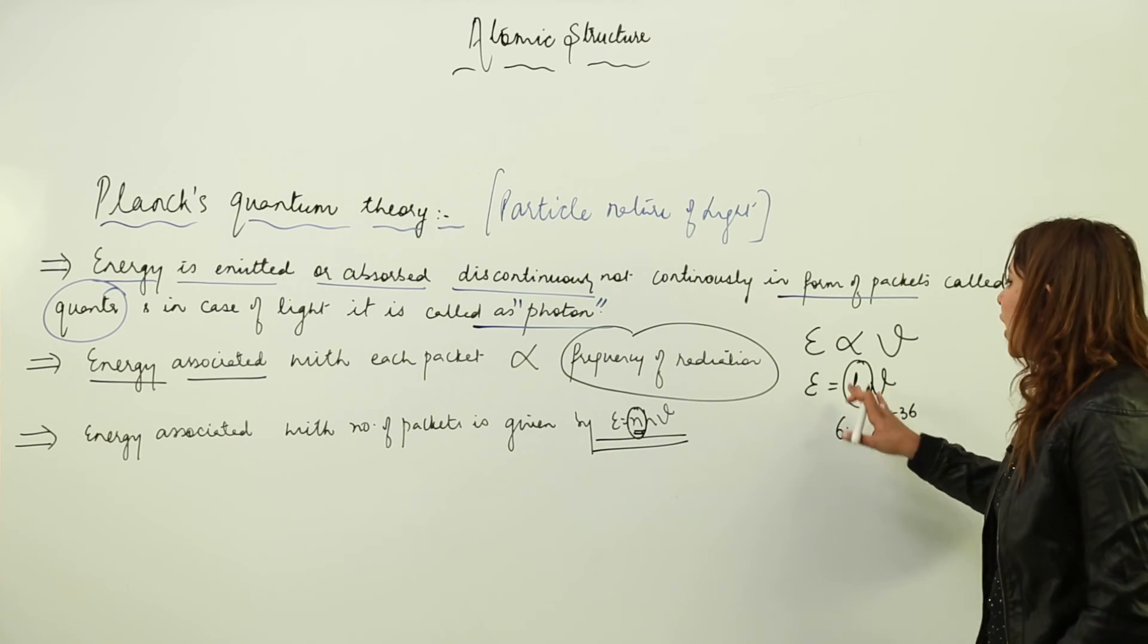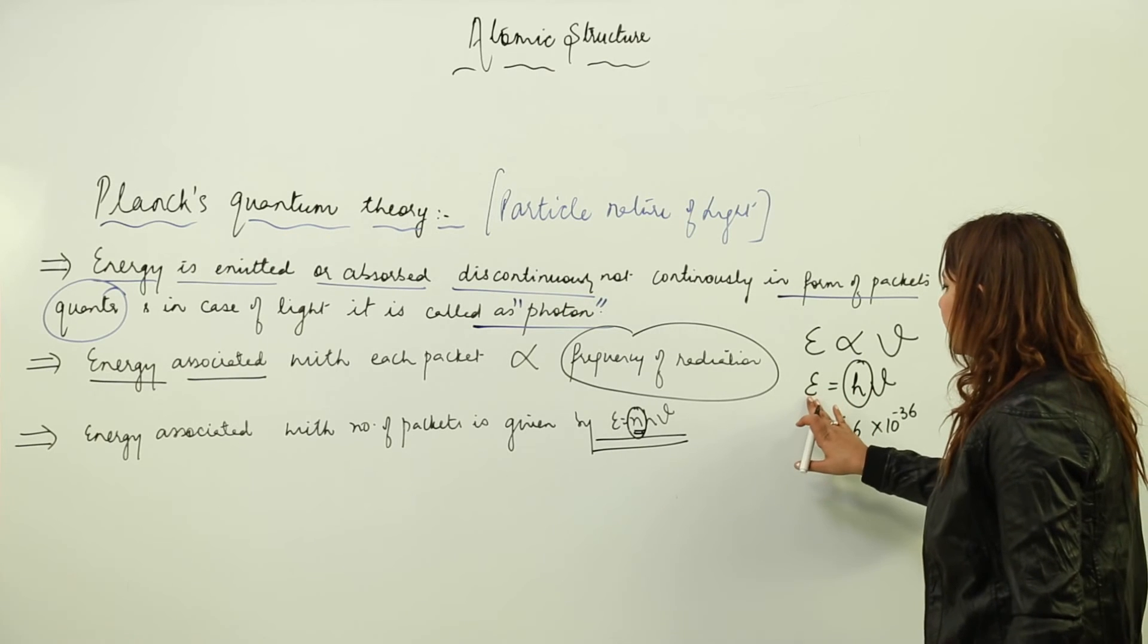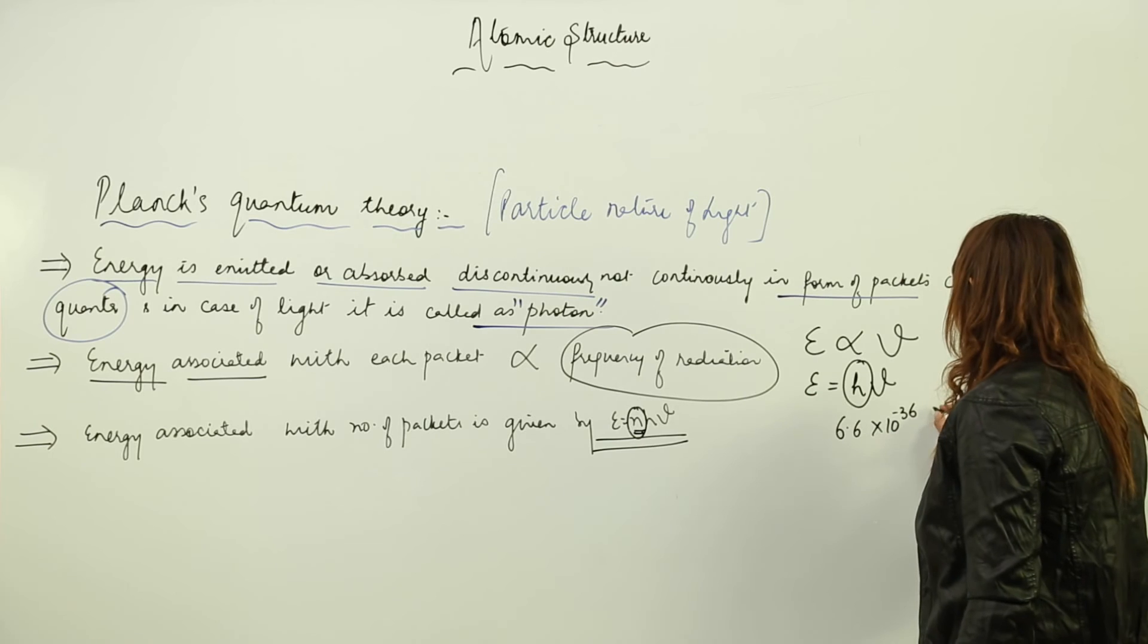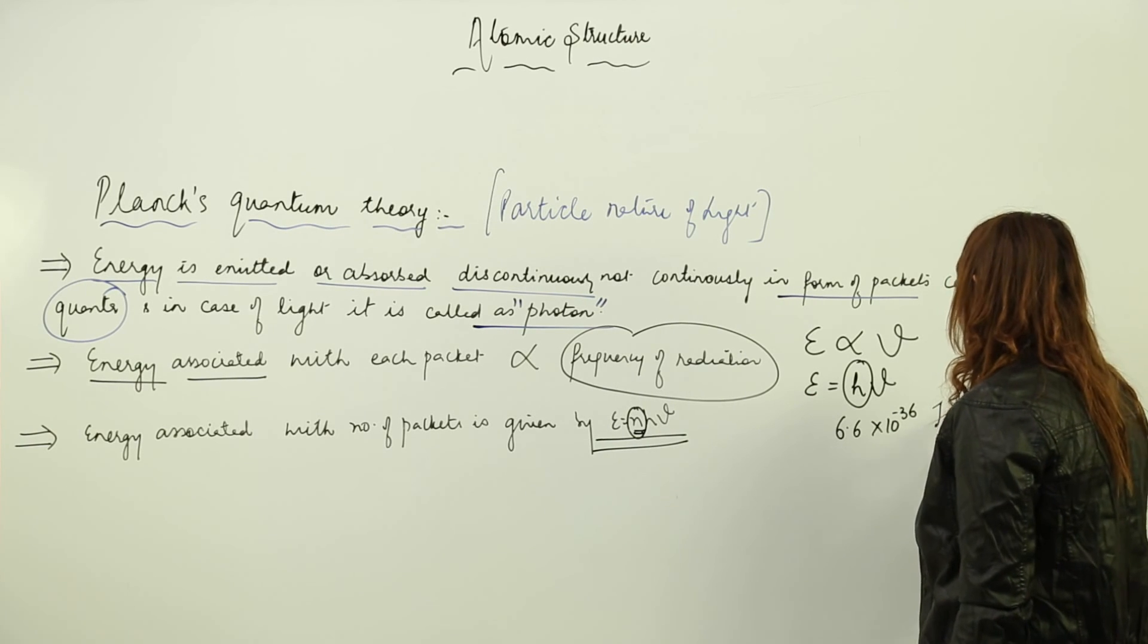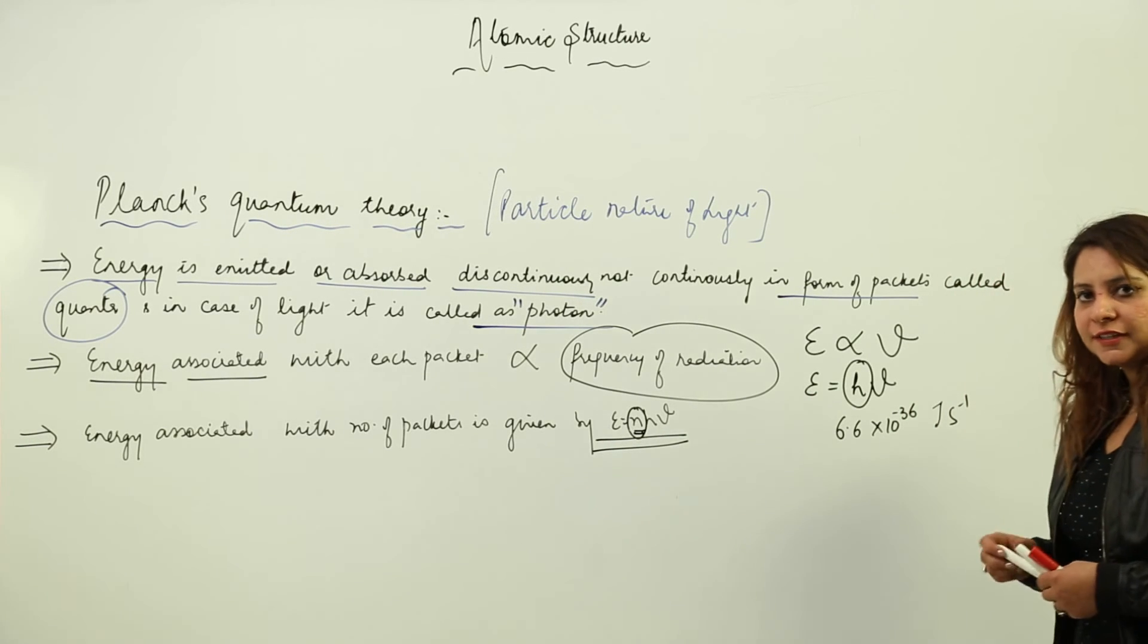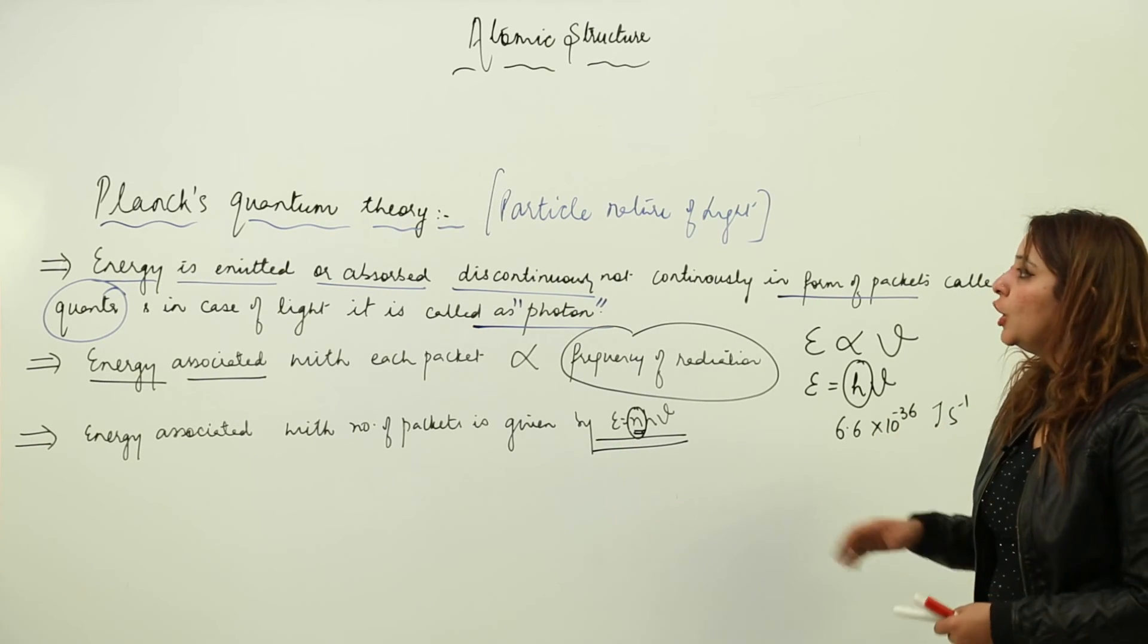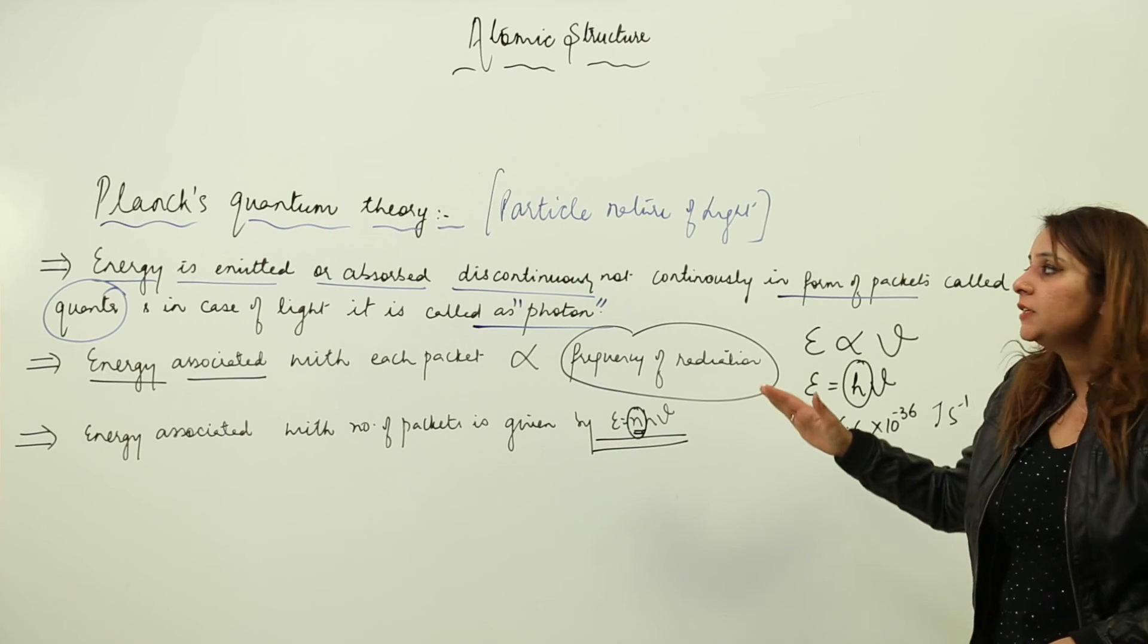Now for the units of h: as you know, this is joules and this is per second, so it is joules per second - 6.634 × 10^-36 joules per second. So this is all about Planck's quantum theory.